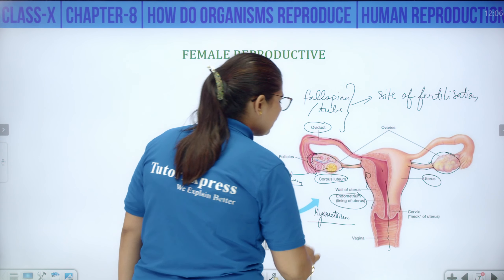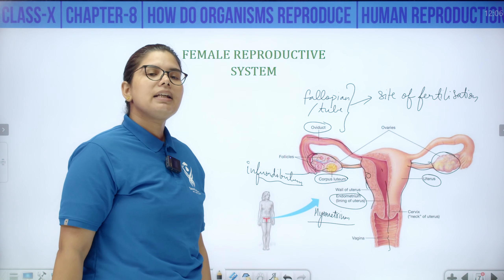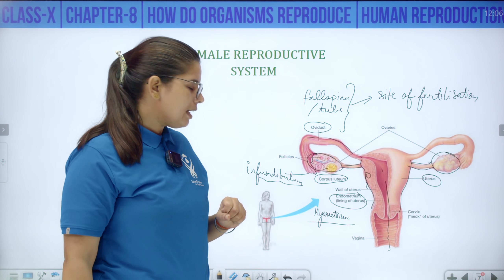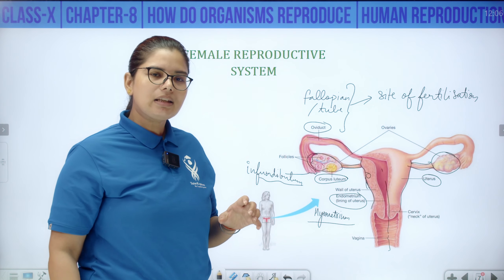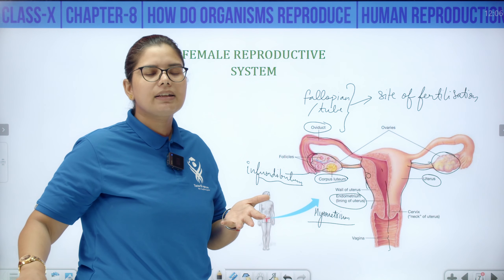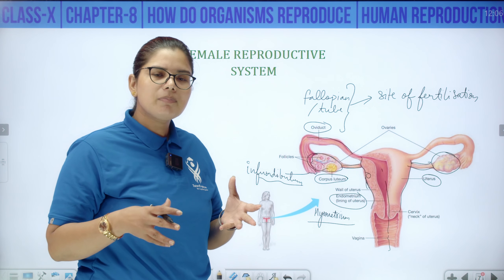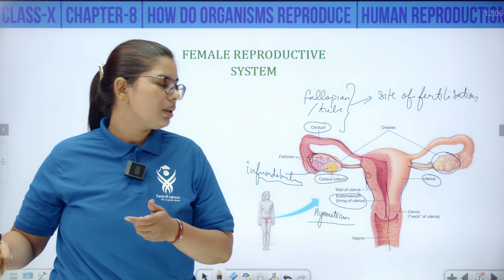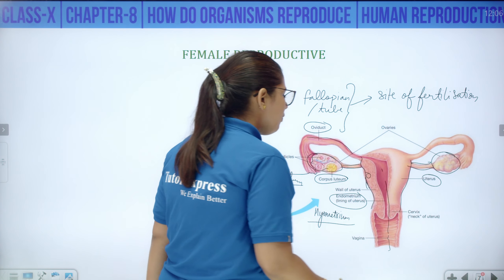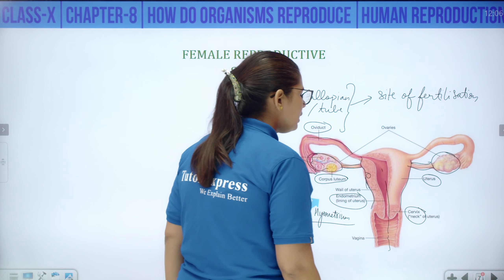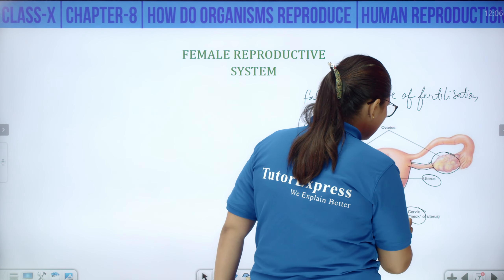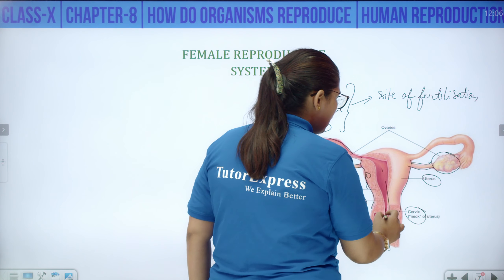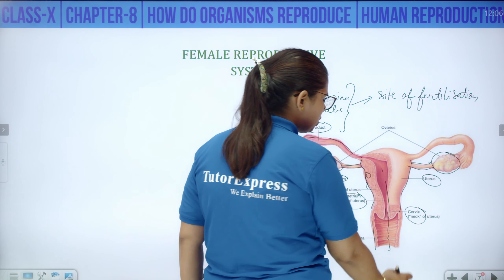The myometrium is the middle wall of the uterus. It contracts and relaxes — when it contracts and relaxes, the child is pushed out of the mother's body. At the time of childbirth, the myometrium undergoes contraction and relaxation to push the child out. The cervix is known as the neck of the uterus, and here the birth canal is located — through which the child is released.